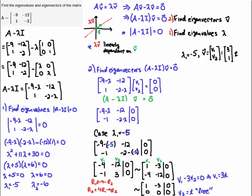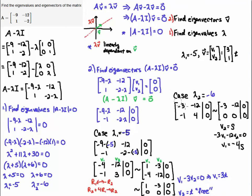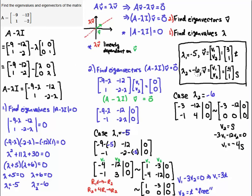To find the second eigenvector associated with lambda 2 equals minus 6, we do something similar. I substitute minus 6 into the equation: minus 9 minus (minus 6) gives minus 3 in one diagonal entry, and minus 2 minus (minus 6) gives plus 4 in the other diagonal entry. I multiply the top row by minus one-third and add it to the second row to zero it out. We again get a free parameter — setting v2 equal to s, from the top equation minus 3v1 minus 12v2 equals zero, I get v1 equals minus 4s. So the eigenvector associated with lambda 2 equals minus 6 is s times [minus 4, 1], which we write as [minus 4, 1].